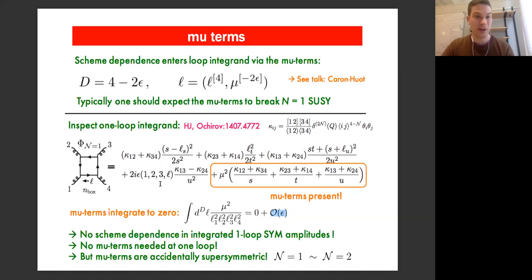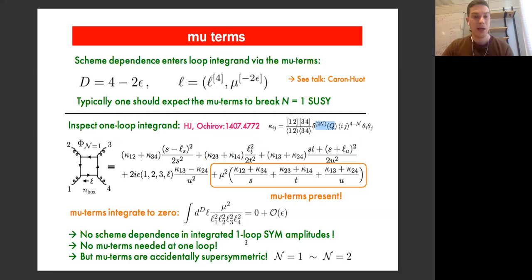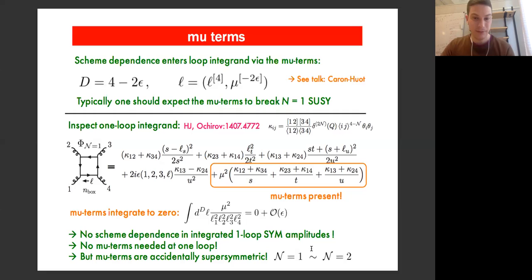So there's no scheme dependence in the integrated one-loop result, but there is one in the integrand. In general, for multi-leg amplitudes at one loop, you don't really need a mu term for supersymmetric gauge theories. We can also observe that the mu term here is actually supersymmetric by accident because it depends on kappa, which depends on delta Q. This is a matter graph — I'm looking at an N equals one long multiplet in the loop, which is the same as a short N equals two multiplet. So this N equals one amplitude effectively has more supersymmetry than naively expected.